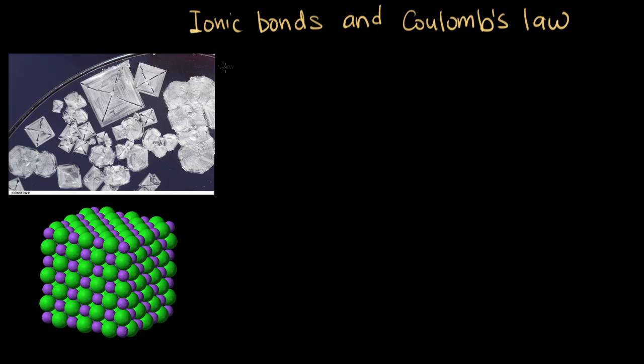Ionic bonds are the bonds that hold together ionic compounds. Basically, it's what holds together cations and anions. An example of a compound that's held together with ionic bonds is sodium chloride, also known as table salt.